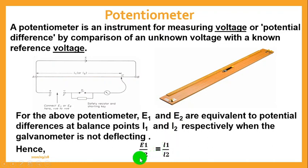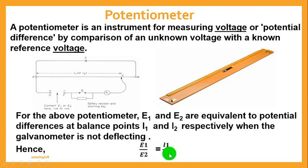We then substitute into the formula and do the simple calculation to get the value of EMF of the second cell, E2. The formula we use here is: E1 over E2 equals L1 over L2. That is the formula for calculating the EMF of an unknown cell using a potentiometer experiment.